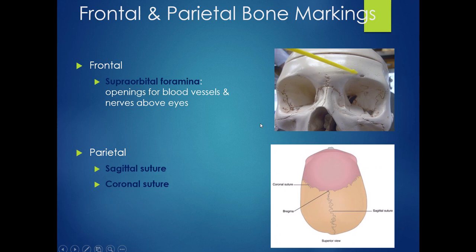If we look at markings on the frontal and parietal bones, on the frontal bone we're talking about the supraorbital foramen — you have two foramina, one over each eye socket, and it is essentially an opening for blood vessels and nerves to escape the skull and get out into the more superficial tissues. On the parietal bone, there aren't really many markings beyond the sutures connecting it to other cranial bones, as it's basically just the top of your skull.